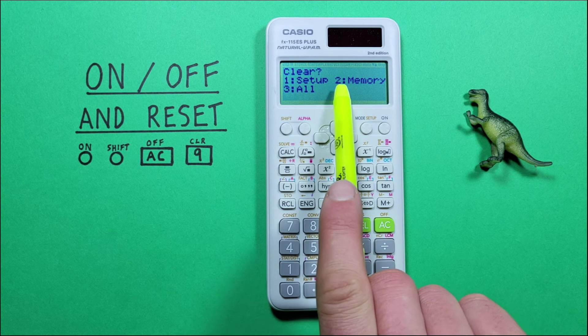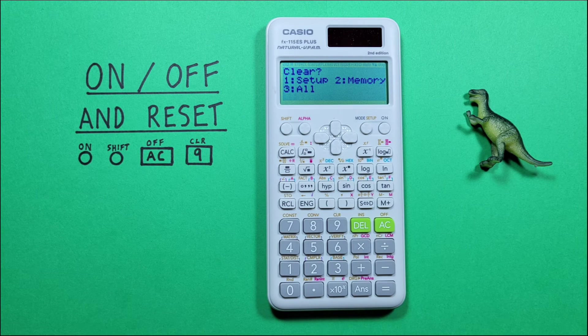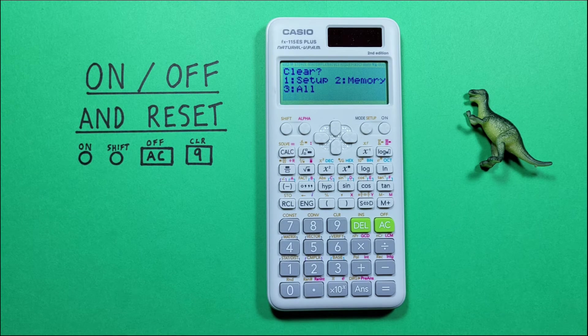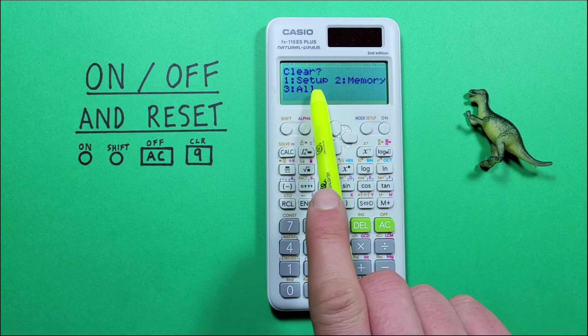We have number 2, which is memory. That will clear any data stored in our store and recall slots. And we have number 3, ALL, which will do both.